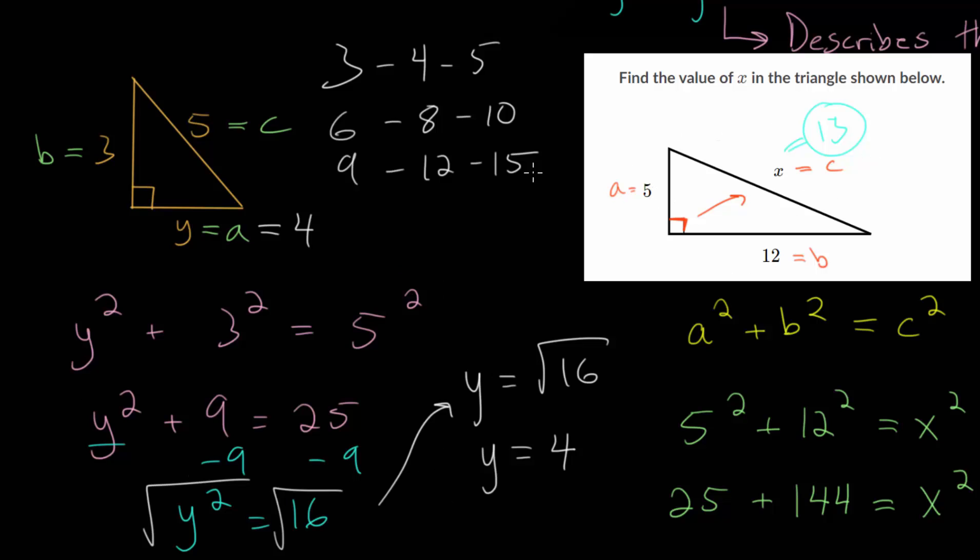But like I mentioned, this is another one, the 5, 12, 13 right triangle. But most right triangles will not have integer values for their side lengths.